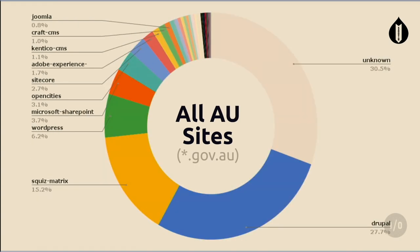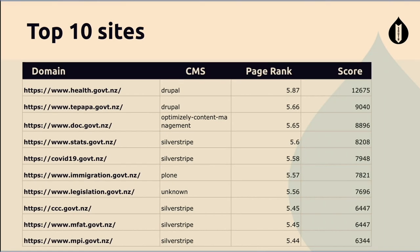I pulled up the Australian comparison so you can contrast. In Australia, Drupal is at about 27.7%, and the next most popular is Squiz — a very different composition, even though the countries are roughly the same demographic size. Moving to the top 10 NZ government sites: Health is coming in with a page rank of 5.87, which converts to roughly 12,500 in base 10.